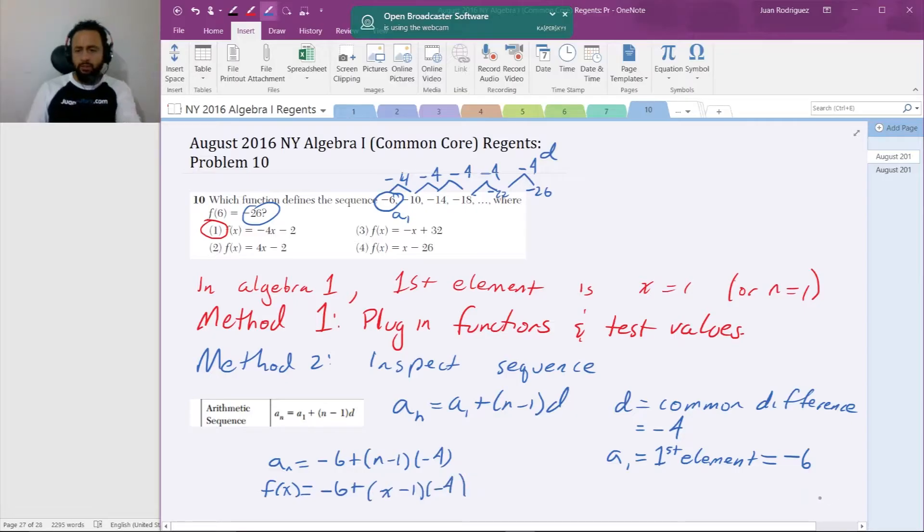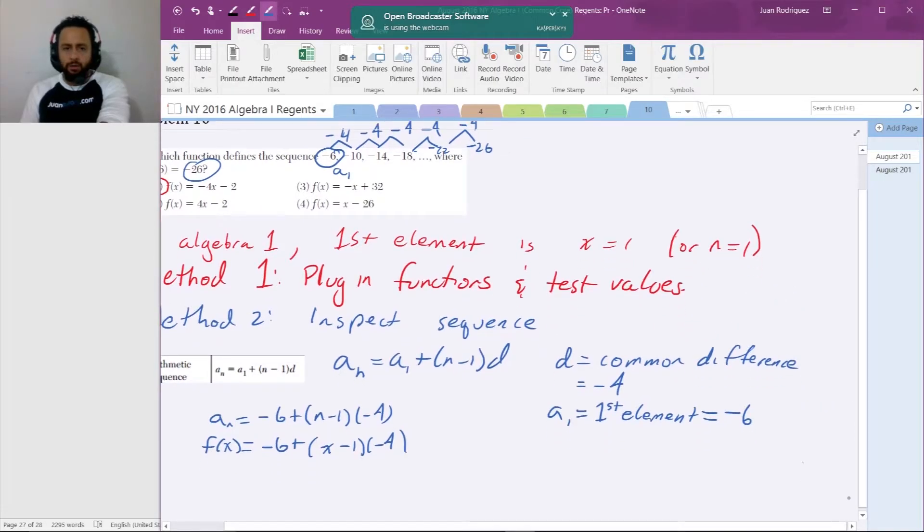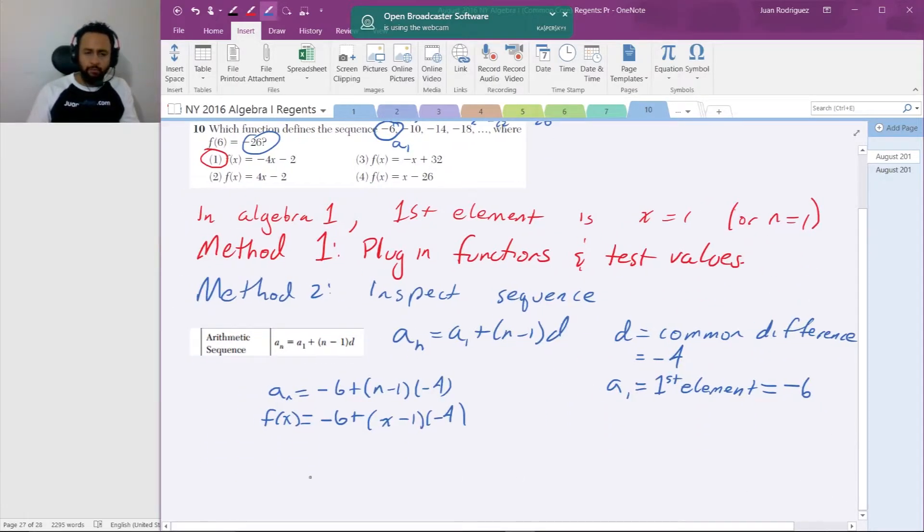I just got to do a little bit of algebra. I'm going to distribute this negative 4. So equals negative 6 plus negative 4x, and then minus 1 times negative 4 is plus 4. Negative 6 plus 4 is negative 2. So equals negative 4x minus 2 as we expected.